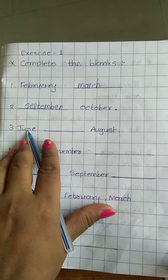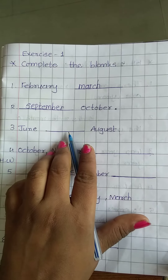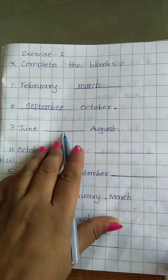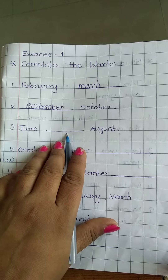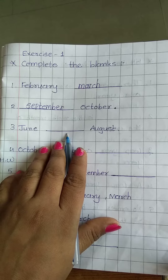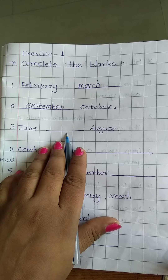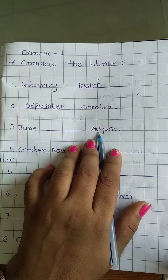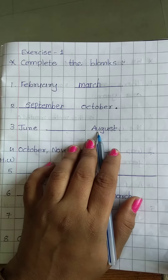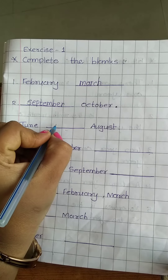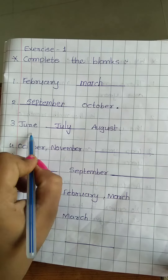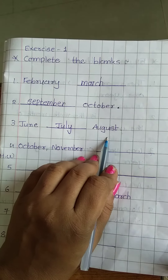Now next. June, blank, August. Which month comes between June and August? We count again: January, February, March, April, May, June, July, August. June and August are given — which month comes between them? June, then July. So we have to write here: J-U-L-Y, July. June, July, August.